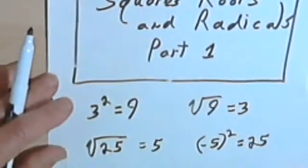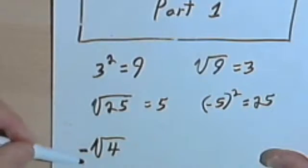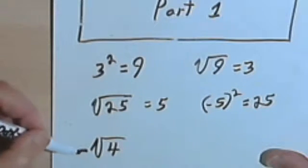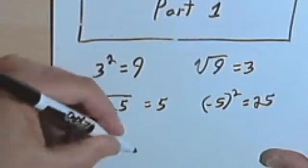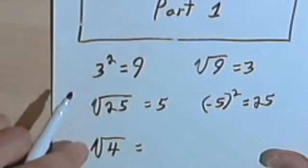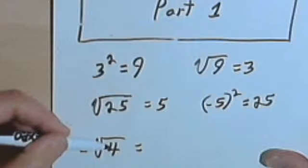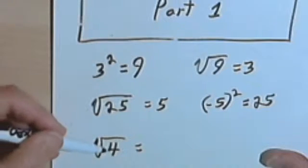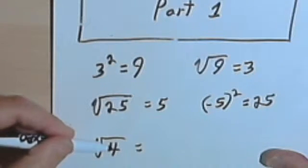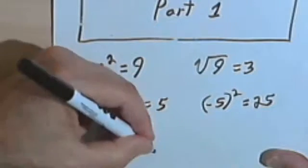If you wanted to get a negative answer, you would do something like this. You would write negative square root of 4. And then you would solve that by first looking at what's under the radical sign and finding the square root of 4. Well, that's 2. And then you would take that 2 and put the negative sign in front of it.